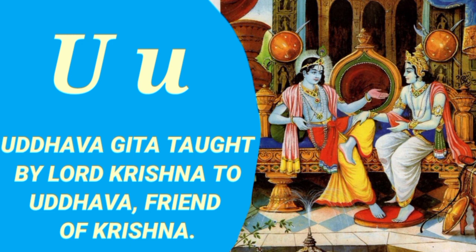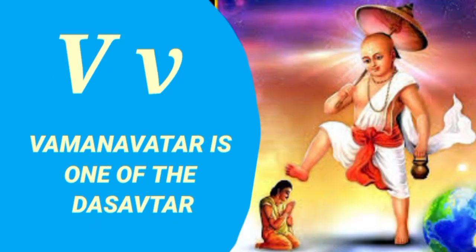U is for Uddhava Gita, taught by Lord Krishna to Uddhava, the friend of Krishna. V is for Vamanavatar, who is one of the Dasavatars.